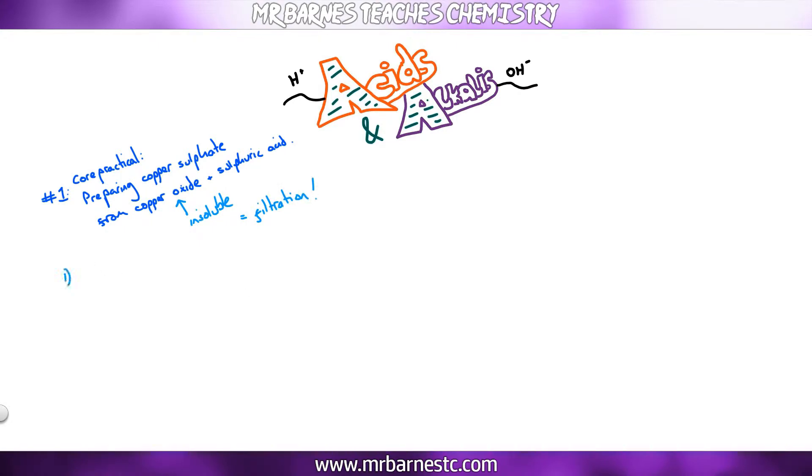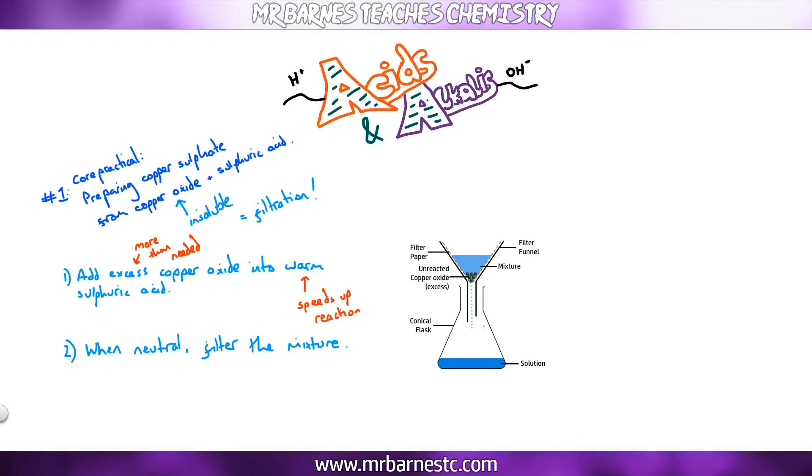The first thing you do is add excess copper oxide into your warm sulphuric acid. Excess means more than needed, and the reason we warm up the sulphuric acid is it speeds up the reaction and makes sure it's fully reacted. The second step is to neutralize the acid, so keep adding in enough copper oxide until it's fully neutral and then filter the mixture with the apparatus you can see here. The copper oxide that is unreacted will stay in the filter paper and your copper sulphate solution will move through into the conical flask below.